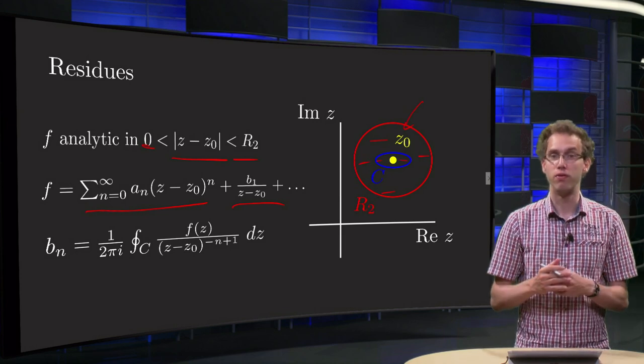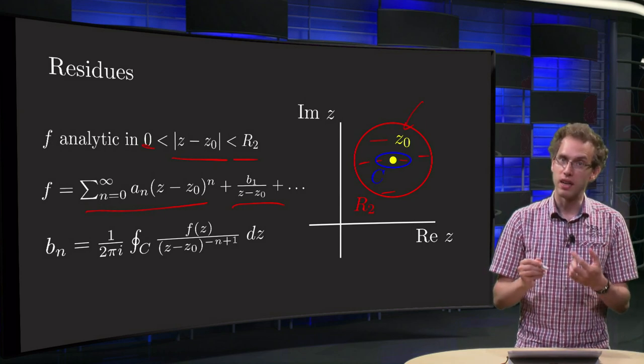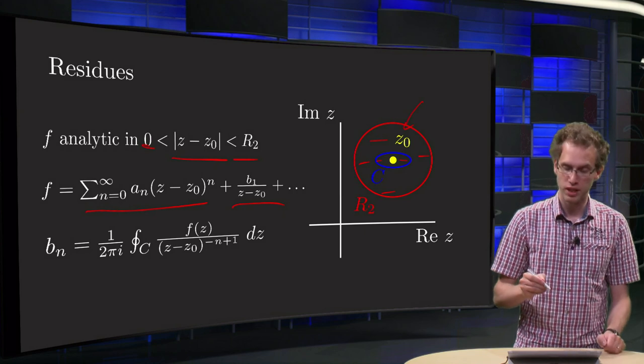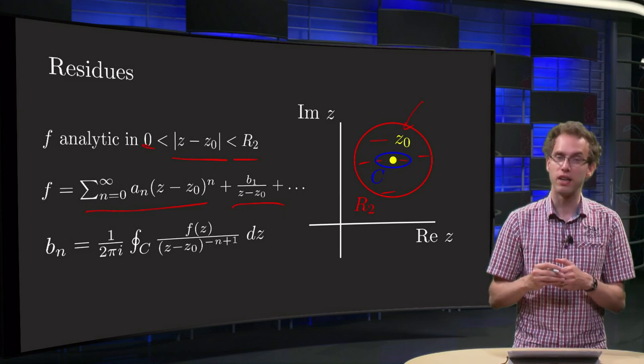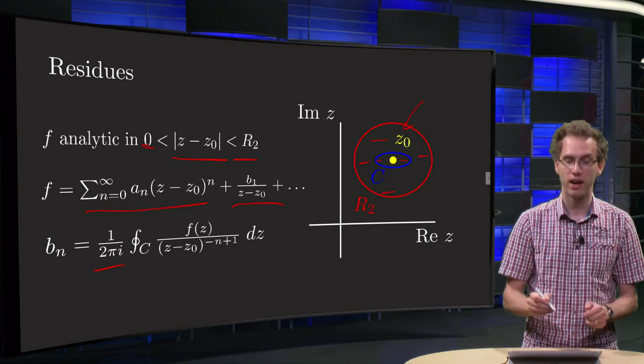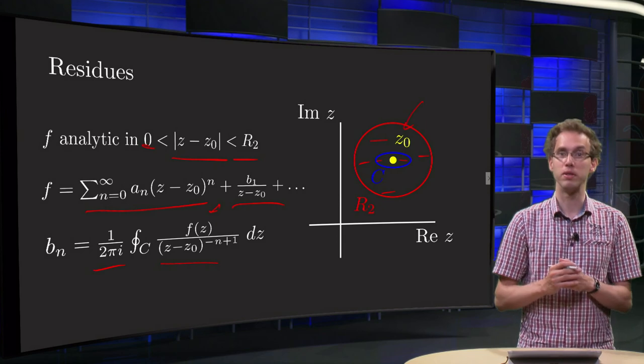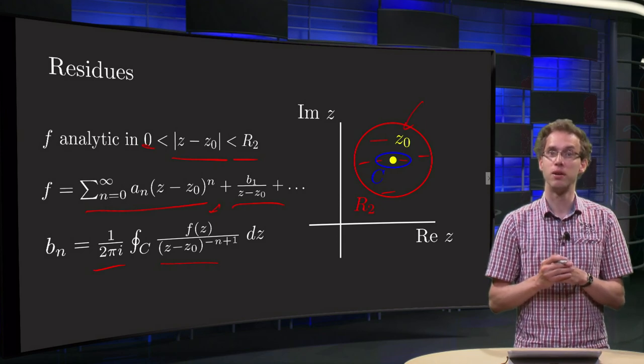And then we have learned that we can compute all the bₙ if we take some contour C in between the yellow and red circle, and then our bₙ is 1/(2πi) times this integral over here: f(z) divided by (z-z₀)^(-n+1).